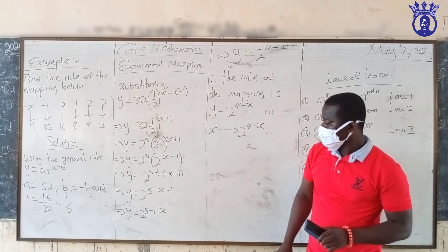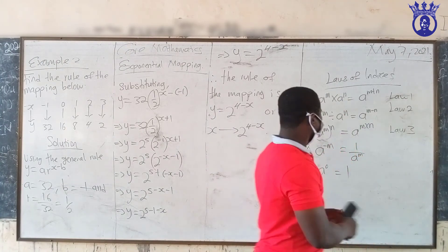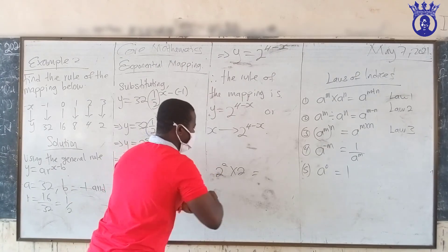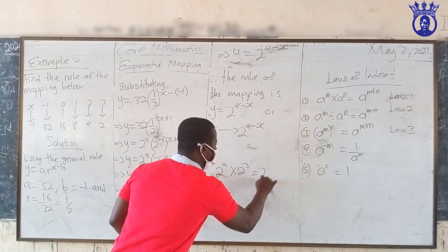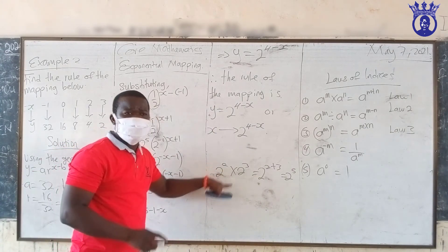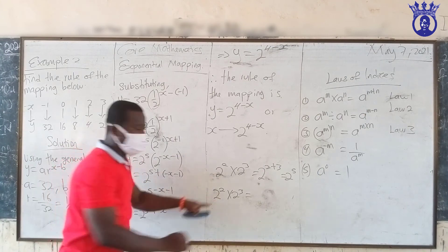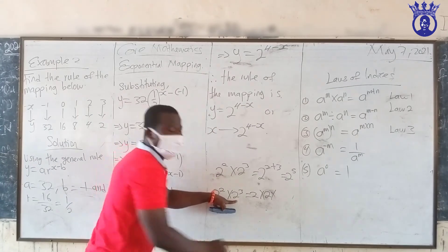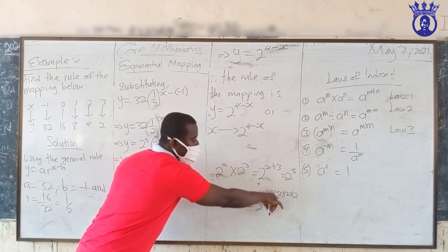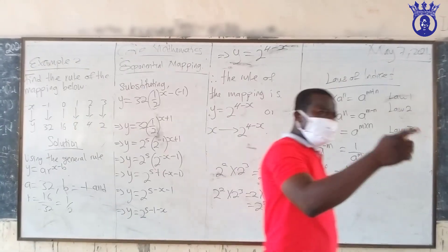Let me illustrate the exponent law: two raised to the power two times two raised to the power three equals two raised to the power (2 plus 3), giving two raised to the power five. Two to the power two means 2 times 2, and two to the power three means 2 times 2 times 2. Combining gives five twos multiplied together — that's where the law of adding powers comes from.